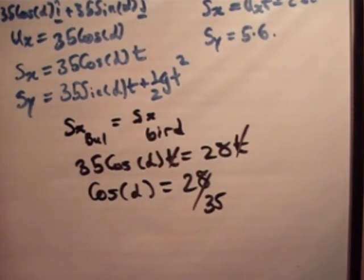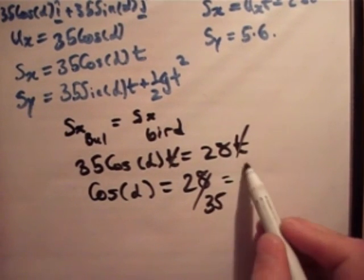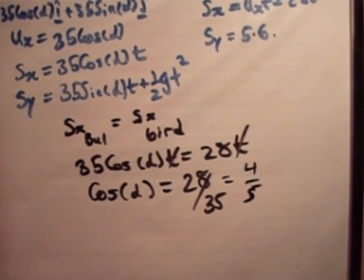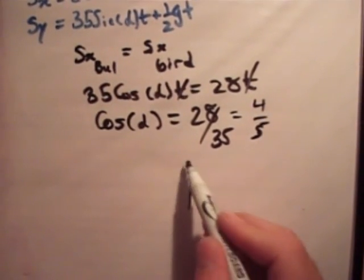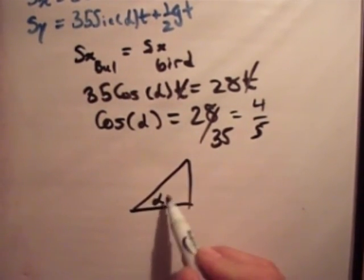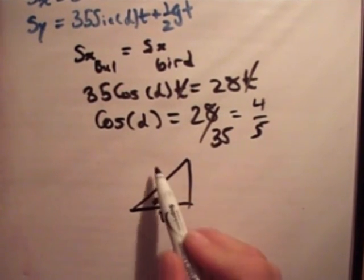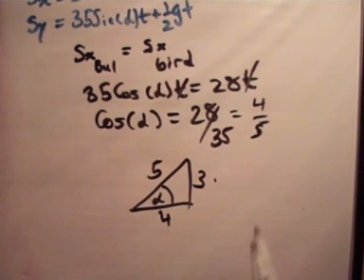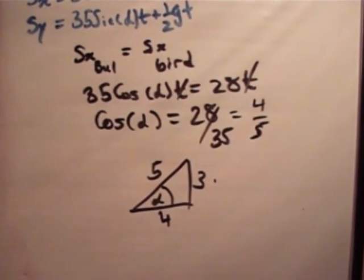28 over 35 simplifies to 4 over 5 for cos alpha. If we draw a triangle where this is alpha, cos is adjacent over hypotenuse. So if we do Pythagoras, you'll find that's 3. Therefore, sine is equal to 3 fifths and tan is going to be 3 quarters. So you can see tan is opposite over adjacent here, 3 quarters. So that's part 1 done and that was pretty straightforward.